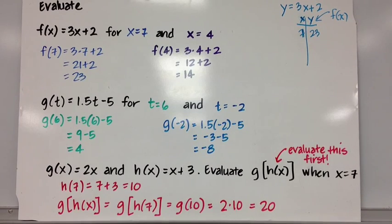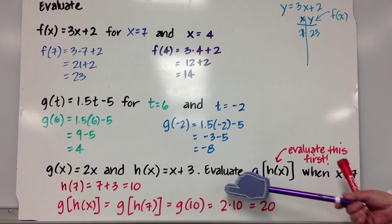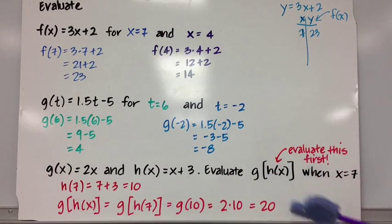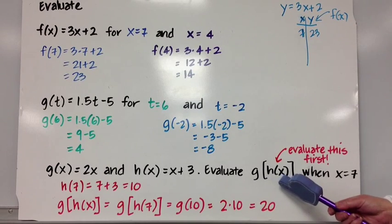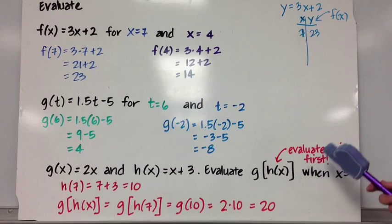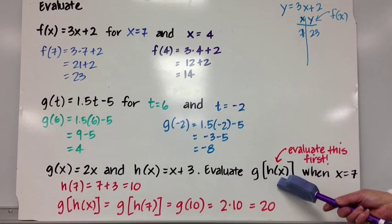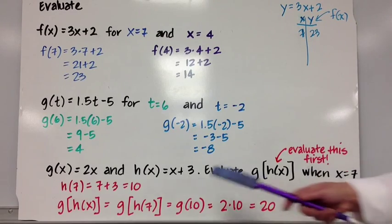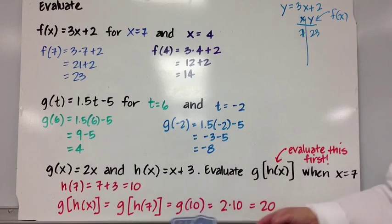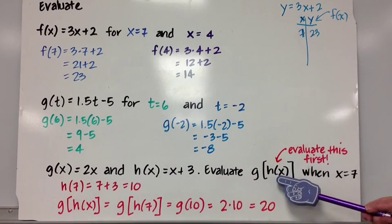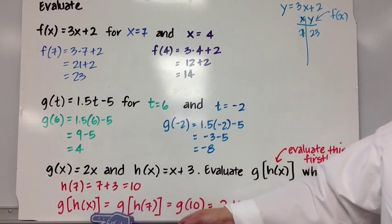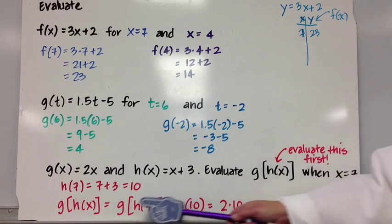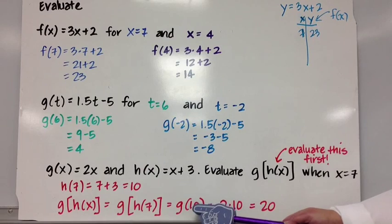Let's say g(x) = 2x and h(x) = x + 3. I want you to evaluate g(h(x)) when x = 7. Basically, we're doing a function of a function. We're going to start with the innermost function and first evaluate h(x). When x is 7, h(7) = 7 + 3 = 10, because h(x) = x + 3. So h(7) = 10.